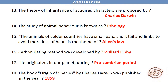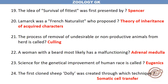Life originated on our planet during the Precambrian period. The book Origin of Species by Charles Darwin was published in the year 1859. The idea of survival of the fittest was first presented by Spencer. Lamarck was a French naturalist who proposed the Theory of Inheritance of Acquired Characters.